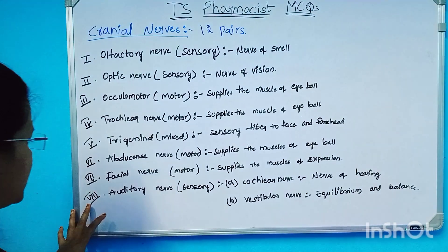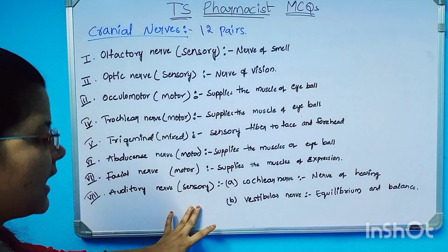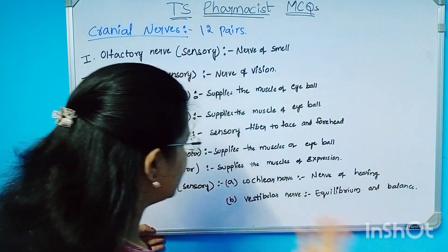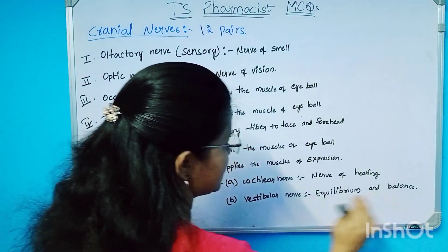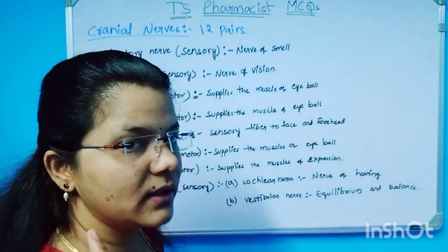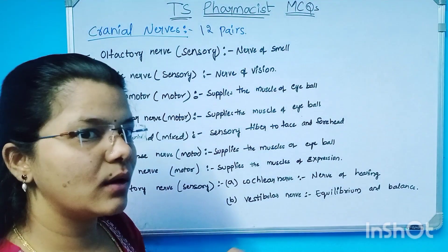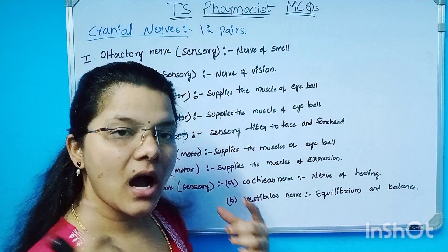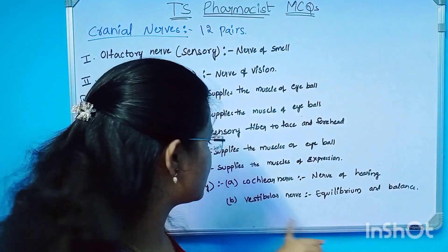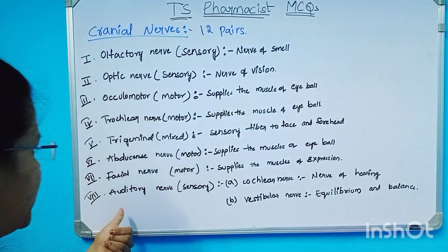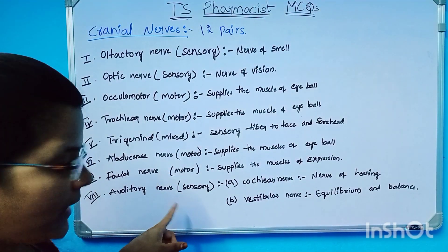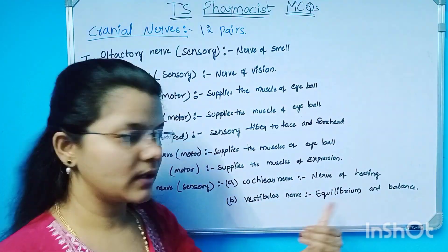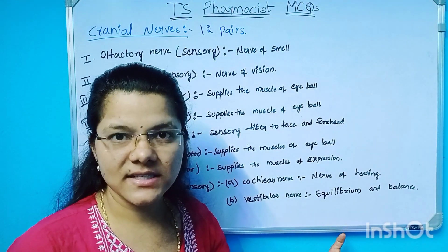The eighth cranial nerve is the auditory nerve. It is a sensory type and has two divisions: the cochlear nerve, which is the nerve of hearing, and the vestibular nerve, which is responsible for equilibrium and balance. The vestibular nerve creates equilibrium and balance in the ears.